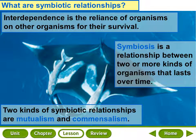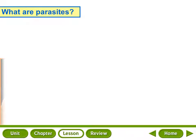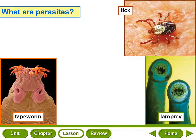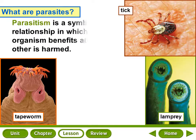Mutualism is a symbiotic relationship where both organisms benefit from each other. Commensalism is a symbiotic relationship where one organism benefits from the other organism without harming it. Parasitism is a symbiotic relationship where one organism benefits from another organism and harms the other organism.